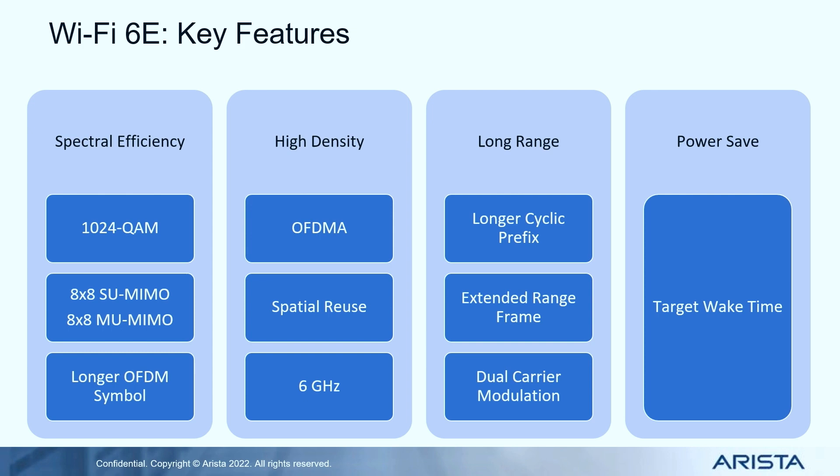For extending the range of Wi-Fi, we have a longer CP which makes larger cells possible. Then you have the extended range frame which increases the reach of transmissions to a longer distance, and dual carrier modulation which is basically a repetition technique to improve the SNR at the cell edge. And finally, we have target wake time, which was originally designed for power save but has other applications as well.